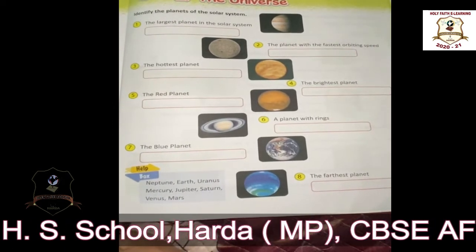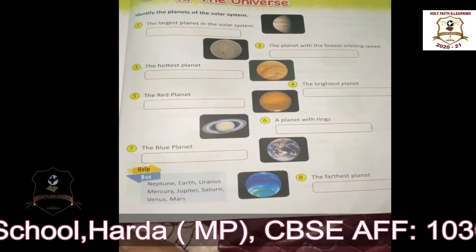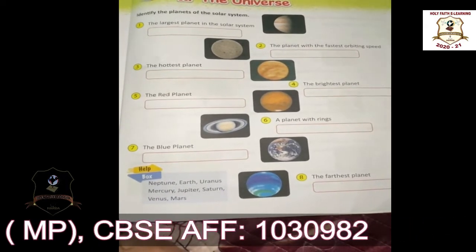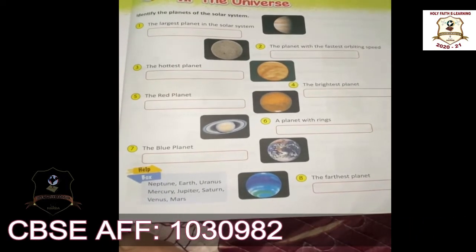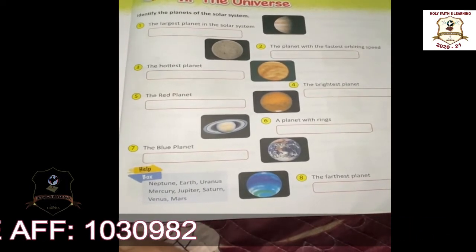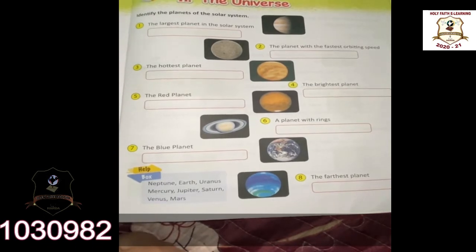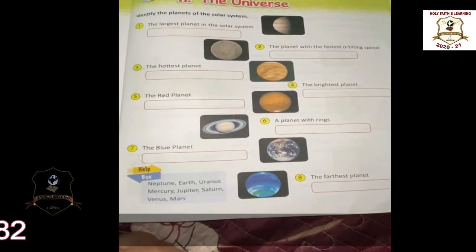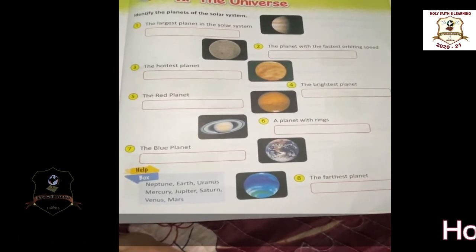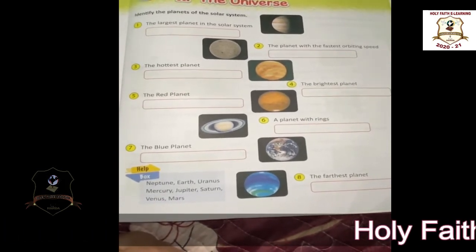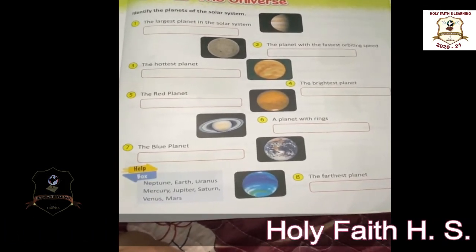They are Mercury, Venus, Earth, Mars, Jupiter, Saturn, Uranus and Neptune.